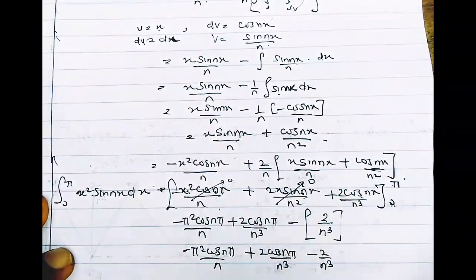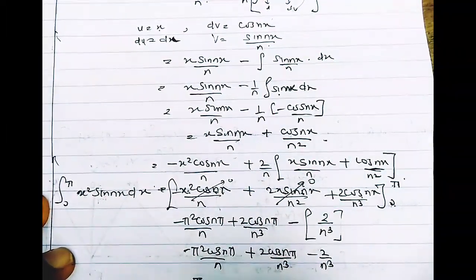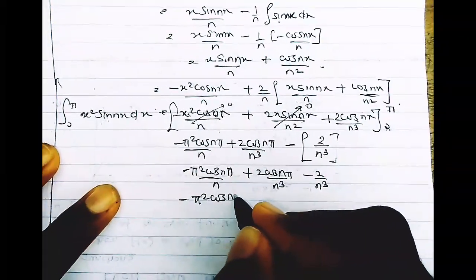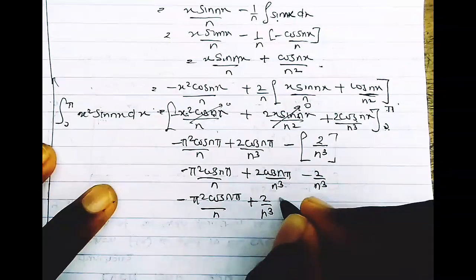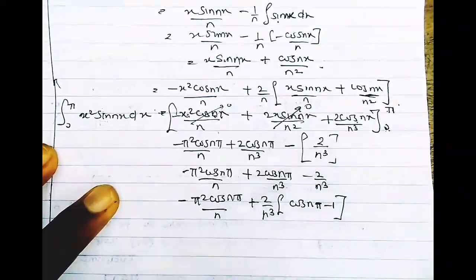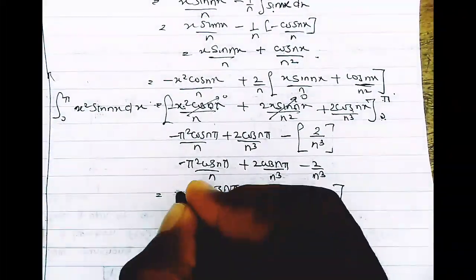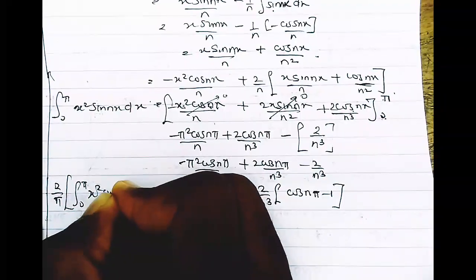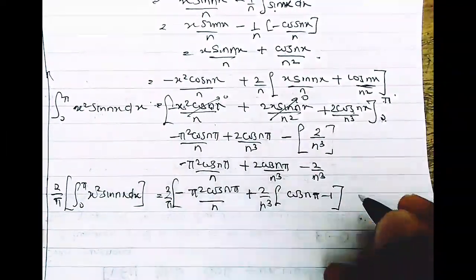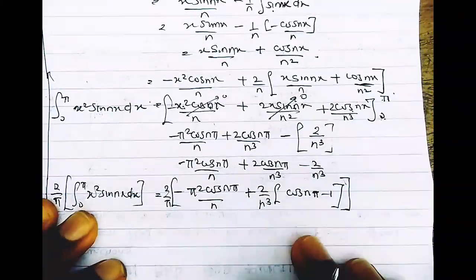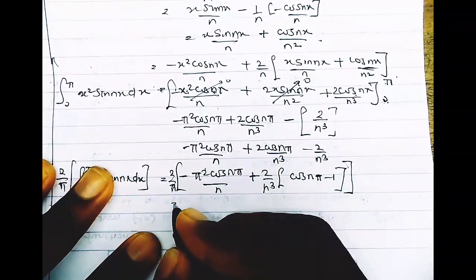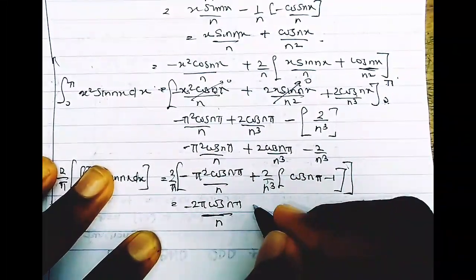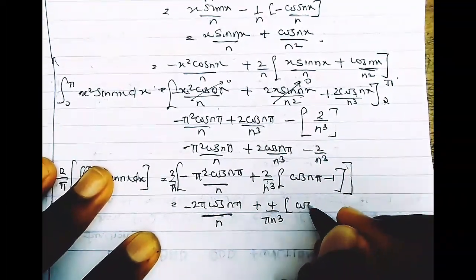Do not forget that all of this is multiplied by the 2/π from our initial bn formula. Multiplying 2/π by our result: the π cancels one π factor, giving bn = −2π·cos(nπ)/n + (4/πn³)(cos(nπ) − 1).